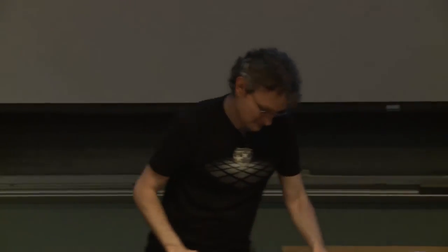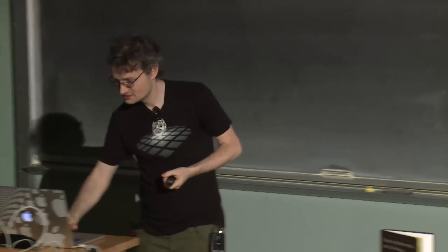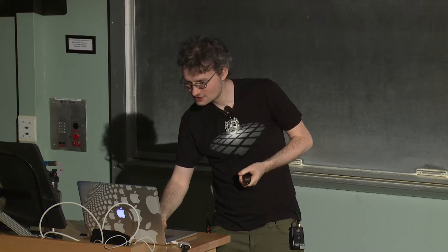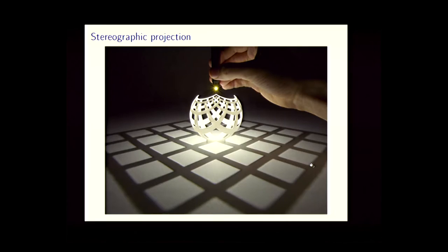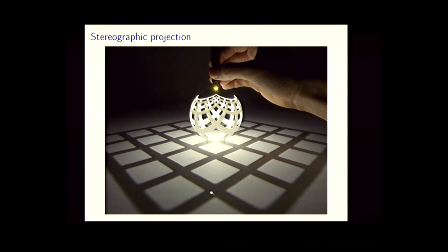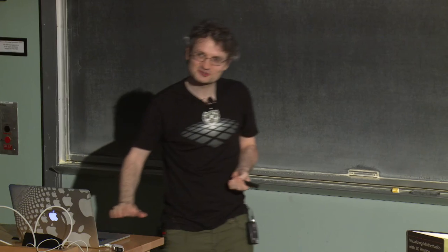Here's an easier-to-see picture. Stereographic projection is a way of mapping from a sphere to the plane. I've got a light source up here; light rays come down, hit the sphere somewhere, carry on, and hit the plane. The map goes from where it hits on the sphere to where it hits on the plane. It's actually a very simple mathematical formula, but the physical interpretation is so pretty that you don't really need to know the formula to understand what it's doing.